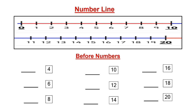Here is number 4 — you can see this is number 4, right? With the help of the number line, where is number 4? Yes, it's here. So before number 4, which number will come? Yes, 3. So one before number 4 it will be number 3.